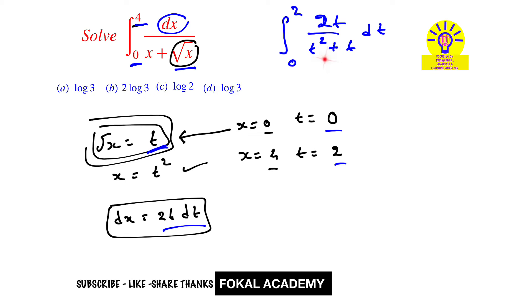In the denominator, bring the t common. So then it becomes integral of 0 to 2, 2t divided by t into t plus 1 dt. Now t t cancel and becomes integral of 0 to 2 by t plus 1 dt.